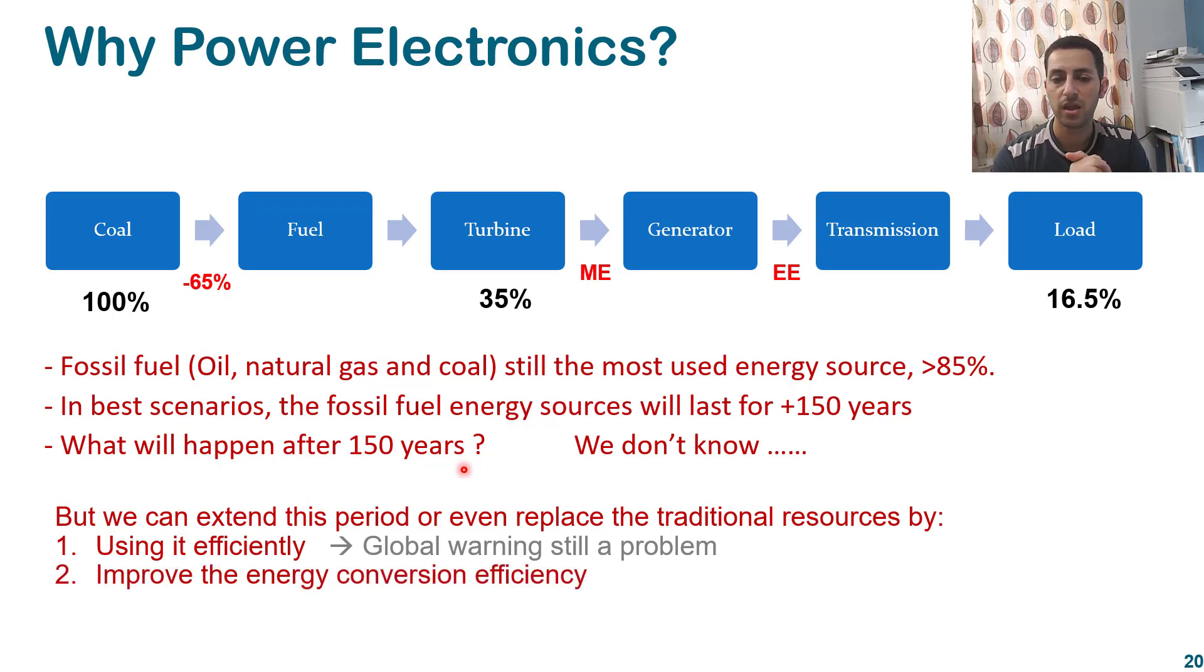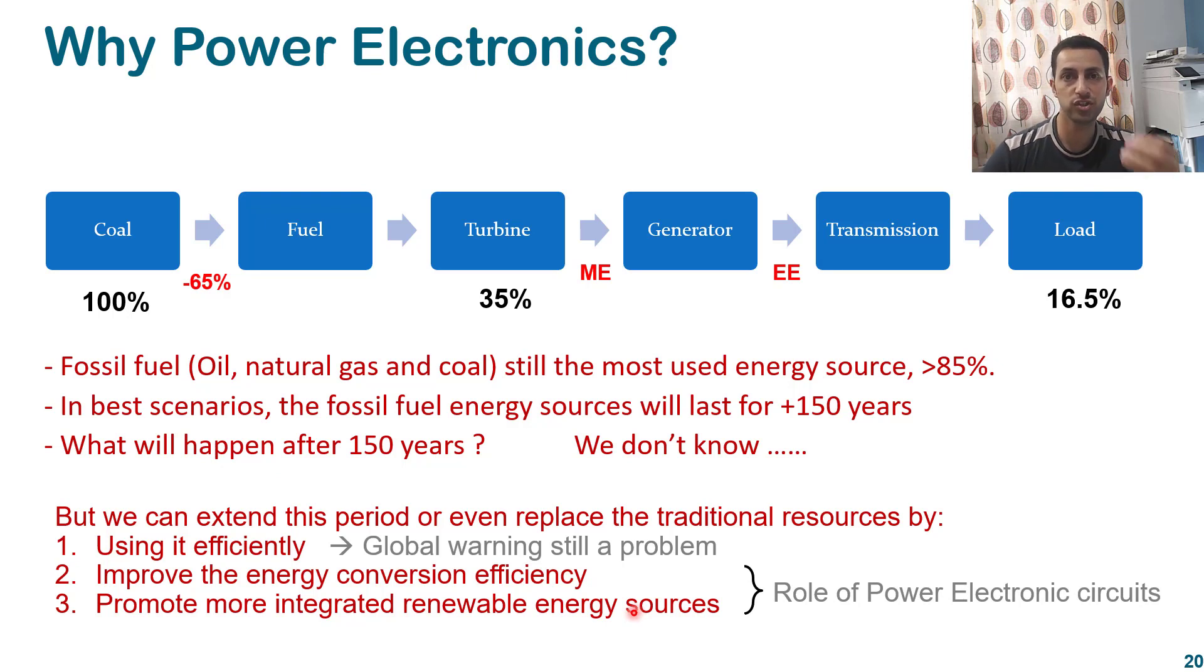But this is not a solution because it's still we have problems out of that because of the global warming. So we have other solutions which is improve the energy efficiency, conversion efficiency, and that's maybe part of our role. If we increase the efficiency, so that's why we can really reduce all these losses here during all the cycle and we can get more power here. And we can really reduce using these traditional resources. Or we can replace all these traditional resources by a new renewable energy, promoting them for integration with our traditional grid systems. And those can be really done by power electronics engineers who develop some power electric circuits.